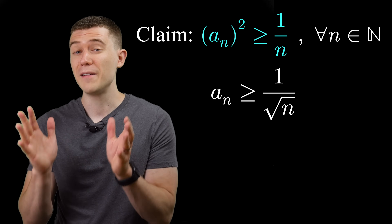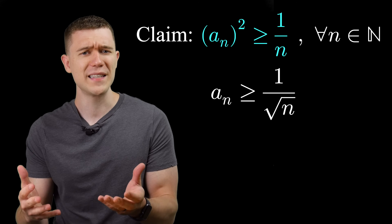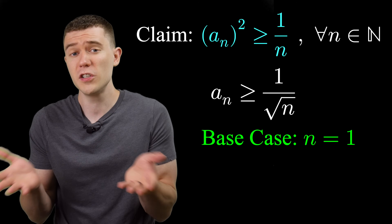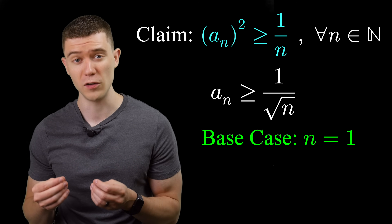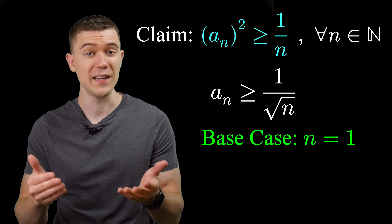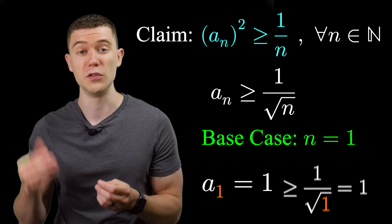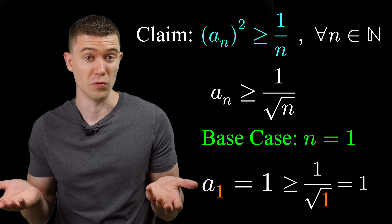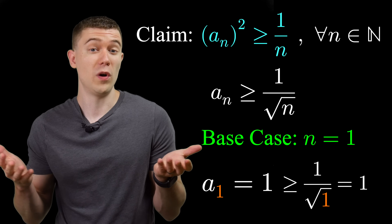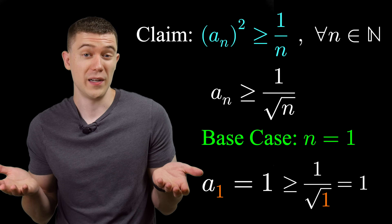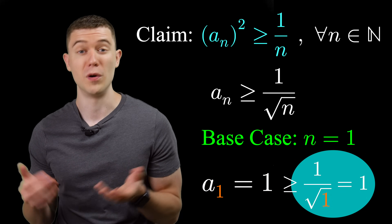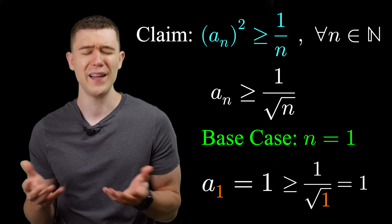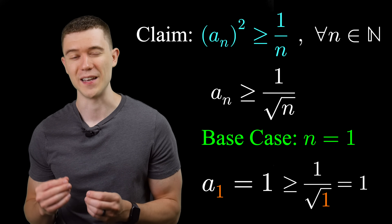Let's lay the first domino with base case n equals 1. We check that a sub 1 is greater than or equal to 1 over the square root of 1. Well, a sub 1 is 1, and 1 over the square root of 1 is also 1. Since 1 is greater than or equal to 1, the base case holds.